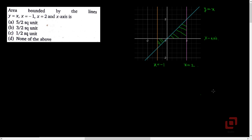Notice that the required area consists of areas of two right-angled triangles. Therefore, we can skip the integration process entirely and use the formula for area of a right-angled triangle, which is 1/2 into base into height. The base of the larger right-angled triangle is 2 units and the height is also 2 units, this point being the intersection of y equal to x and x equal to 2 with coordinates (2, 2).